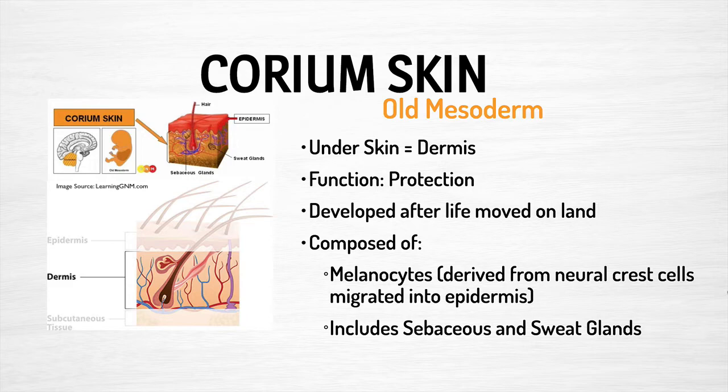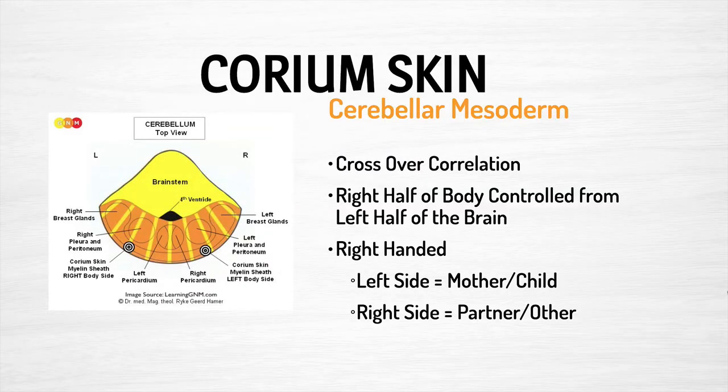The dermis also includes sebaceous and sweat glands. This area is controlled from the cerebellar mesoderm. There is a control center — if you look at the image on the left, those black and white target rings represent the control region in the brainstem that controls this area of the body. When there is a DHS, a conflict, and you have a CT scan of the brain, this is where you will see that conflict activity in one of these two particular areas.